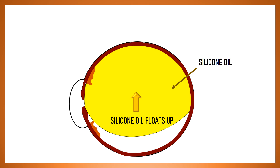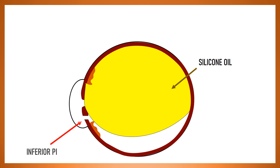That is why an inferior PI is created because it won't get blocked by silicon oil and thus the aqueous humor would pass into the anterior chamber and get drained by the angle of the anterior chamber and silicon oil induced pupillary block glaucoma would be averted.